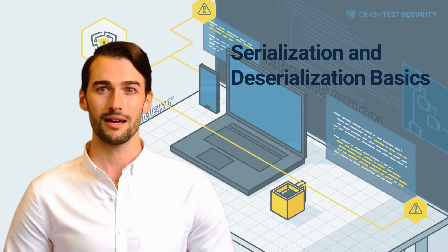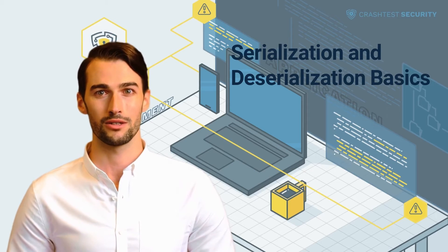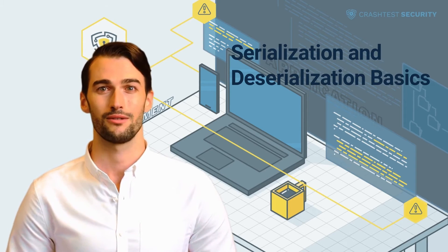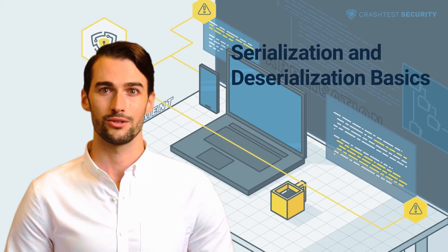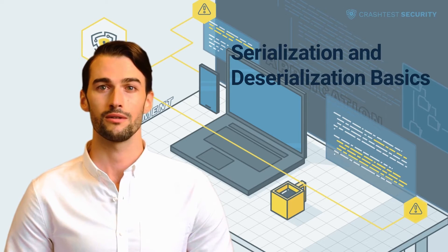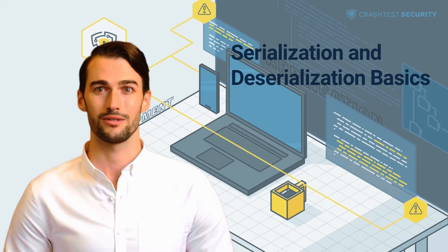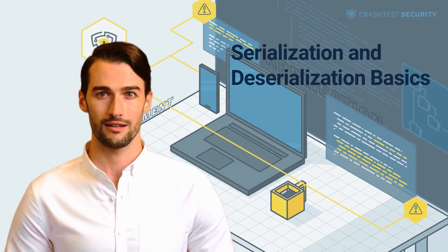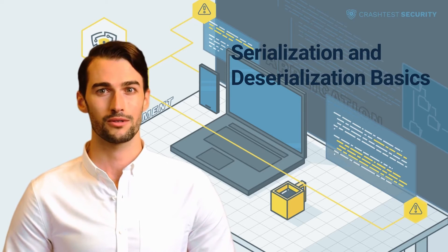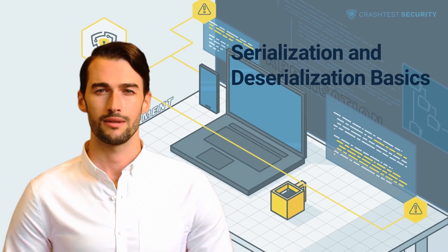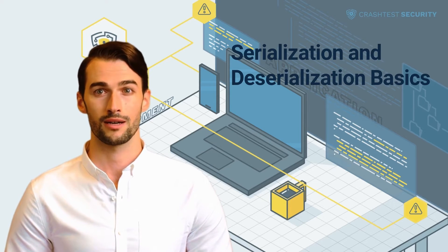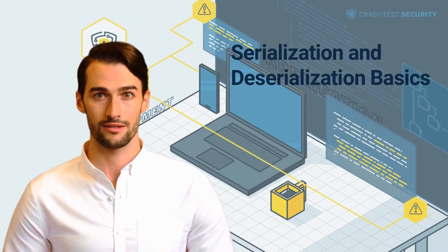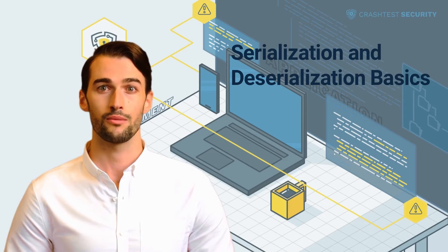The basics about serialization and deserialization. Serialization and deserialization are common practices used in web applications regularly, and many programming languages even have native tools for serialization. Serialization means converting an object into a format for saving it to a file or database, or sending it via streams or networks. Programming languages serialize objects in different ways, using either binary or string formats. The data has to be pre-processed to a byte stream, which is what serialization does.